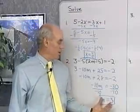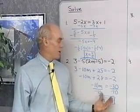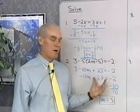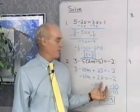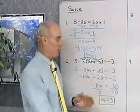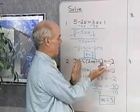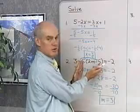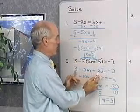I used the same rules as on the previous problem — the addition property of equality and multiplication property of equality — after I simplified both sides of this equation first by using the distributive property to separate the terms.